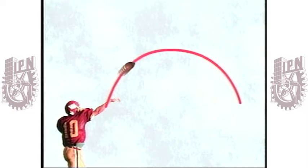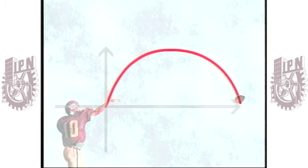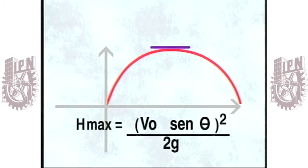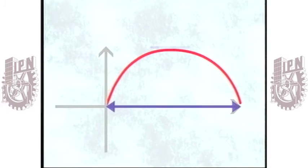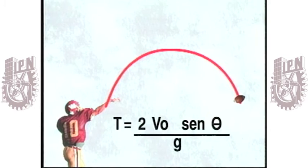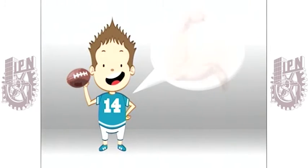En el momento en el que se imprime una velocidad inicial a un proyectil, comienza el viaje por una trayectoria parabólica. La máxima altura del proyectil está dada por esta relación. Su alcance lo encontramos con esta fórmula. El tiempo de vuelo lo notamos con esta ecuación. Ahora, ya sabemos que para llegar más lejos, no basta con imprimir más fuerza, sino buscar el ángulo de elevación apropiado.